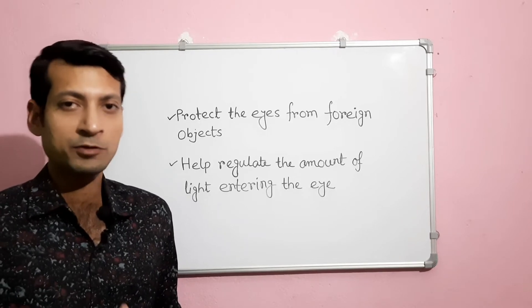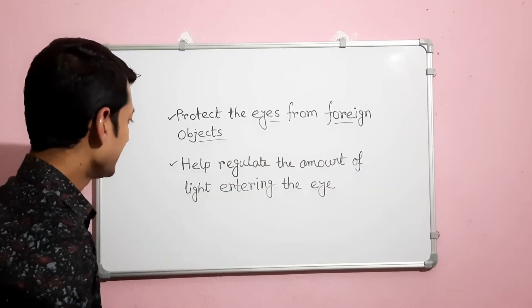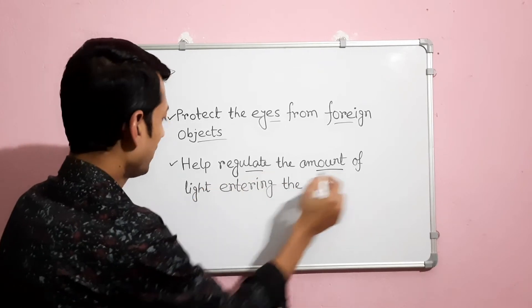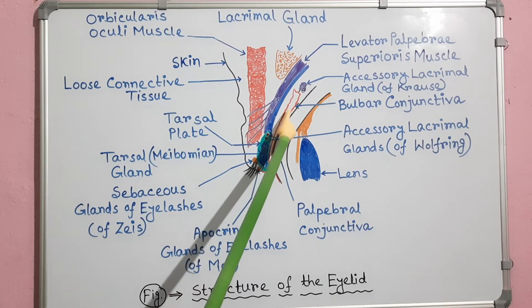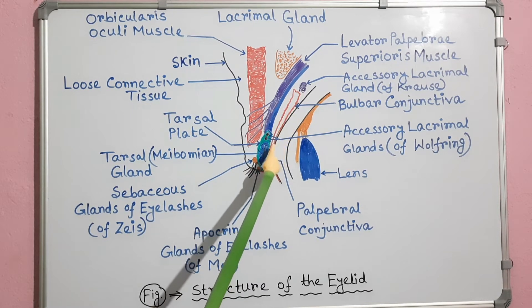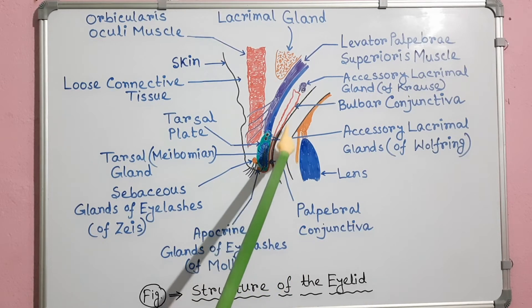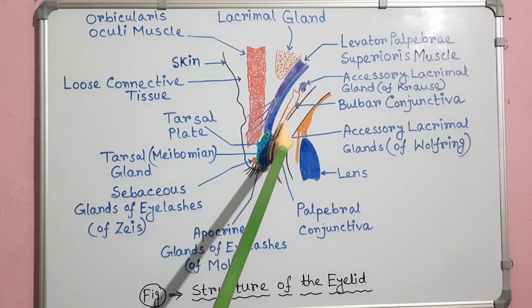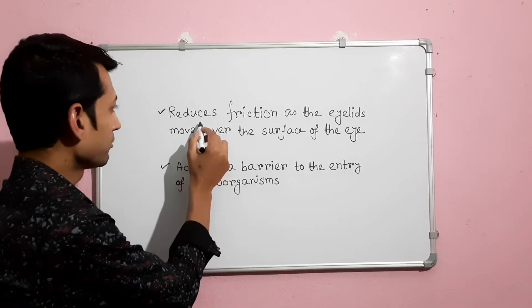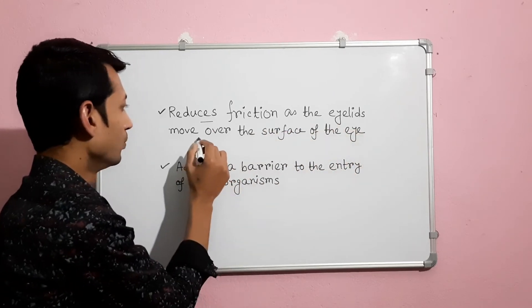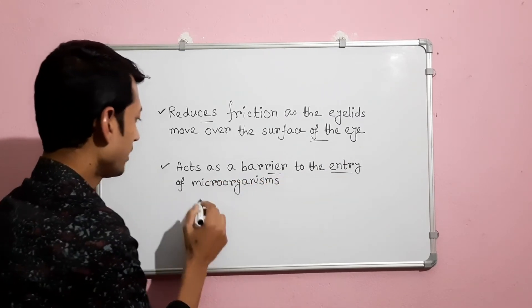The eyelids with their associated lashes protect the eyes from foreign objects and help regulate the amount of light entering the eyes. The conjunctiva is a thin transparent mucous membrane. It covers the inner surface of the eyelids, known as the palpebral conjunctiva, and also covers the anterior white surface of the eye, known as the bulbar conjunctiva. The conjunctiva reduces friction as the eyelids move over the surface of the eye and acts as a barrier to the entry of microorganisms.